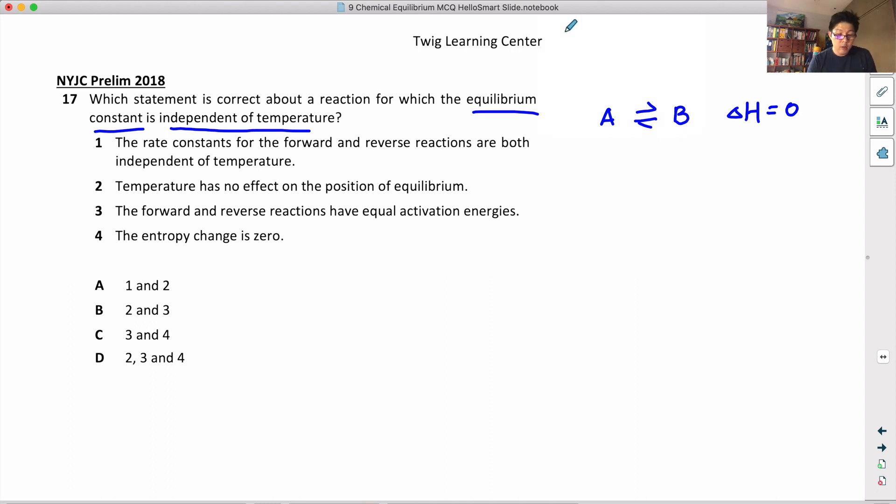Okay, let's look at the first option. Rate constant K - actually there's a formula like this: Ea over RT. This Ea is of course activation energy and this is temperature. So if the temperature changes, the rate constant will change. So rate constant for the forward and reverse are both independent - that is not true. Temperature changes, rate constant will change, so this is false.